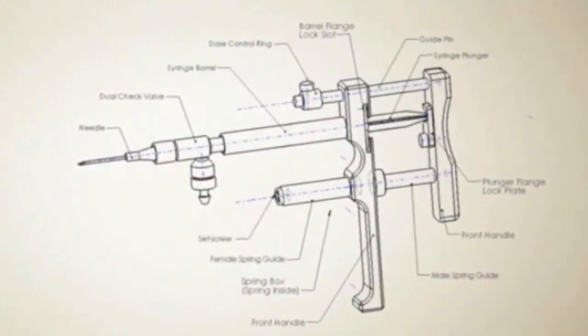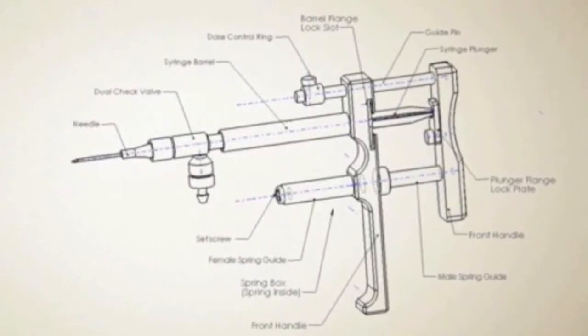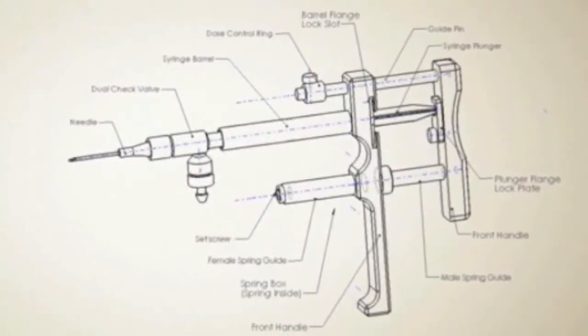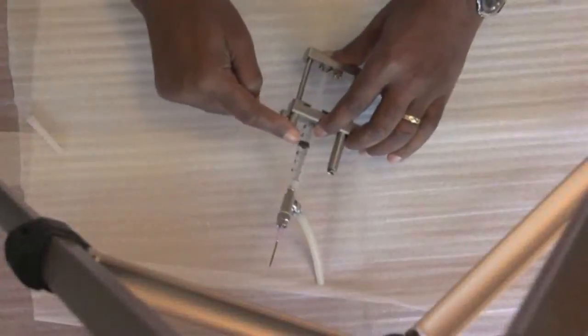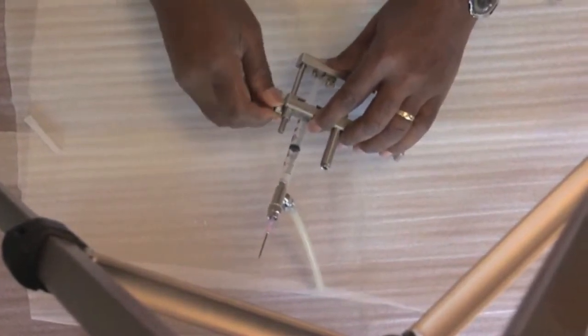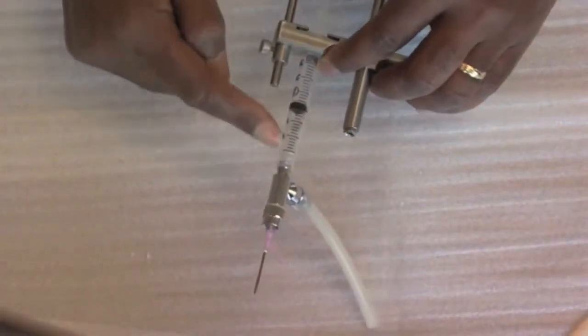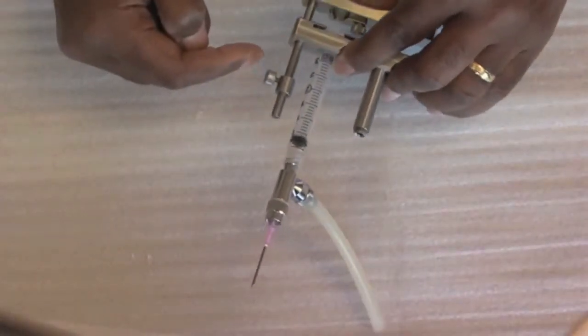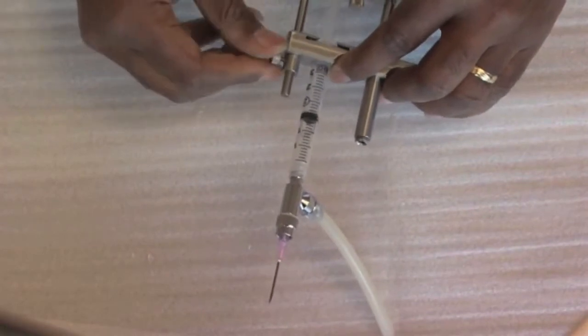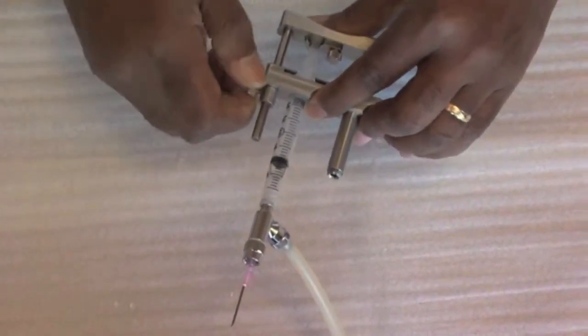We will now demonstrate how to control the dosage volume delivered with each compression. First, loosen the dose control ring, then adjust the volume to the desired level and tighten the dose control ring.